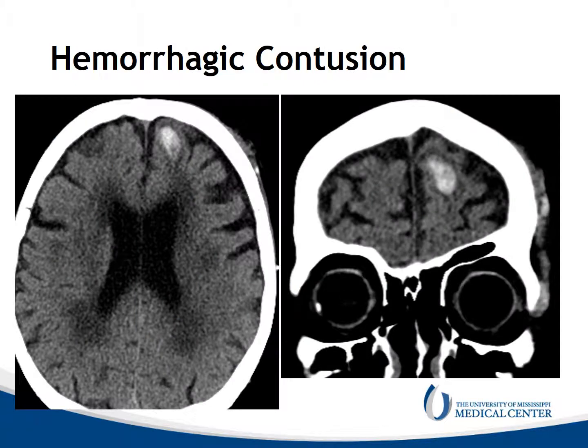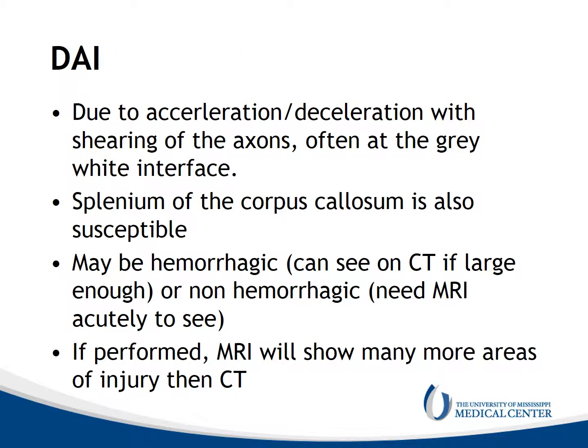Here's a hemorrhagic contusion in the left frontal lobe. This was traumatic. We can see the central hyperdensity reflecting the hemorrhage, and particularly on the coronal view, surrounding hypodensity reflecting edema.